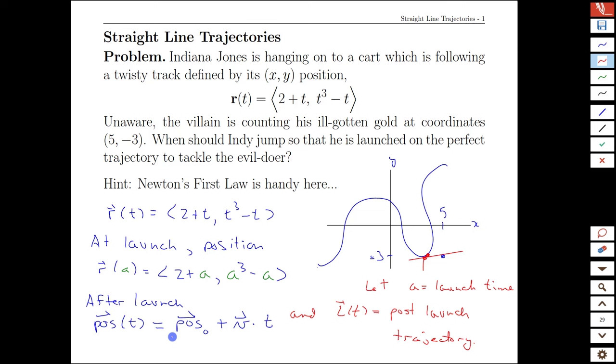Our position after launch is going to be where we start, plus the velocity times time. Fortunately, we have all of these ingredients. The position at time zero, well, this is time zero after launch, that is going to be exactly what we mean by our position on the track at launch time. So we might launch after five seconds, and we're going to reset the clock and go from there afterwards.